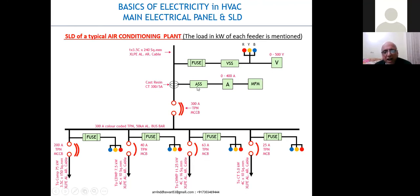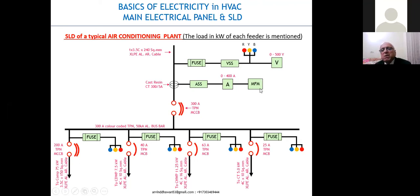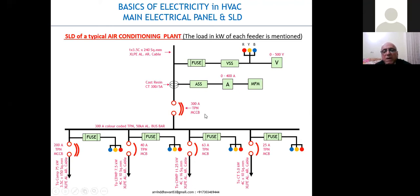ASS: A for ampere, S for selector, S for switch. MFM: M for multi, F for function, M for meter — the multi-function meter. It can read energy, frequency, and power factor. Then we come to the main switch: 300A means 300 amperes can be carried by this switch. TPN: T for triple, P for pole, N for neutral — meaning there will be three conductors plus one neutral, so four connections total in this switch. The conductors are color-coded red, yellow, blue, with neutral identified as black.